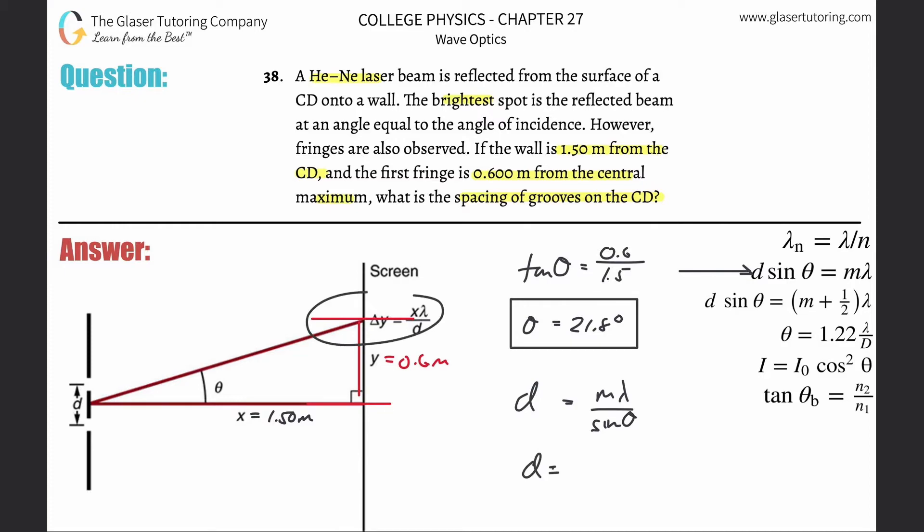So it turns out that since this is the first fringe, m is 1. The wavelength, they didn't tell it to you. Is the problem not calculable? Well, if you don't look it up, it's incalculable. So we have to look it up. This is about 632.8 nanometers. So that's then going to be multiplied by 10 to the minus 9th. It's the wavelength of the helium-neon laser. You've got to look that up.